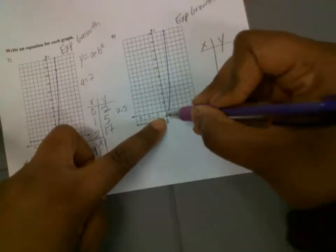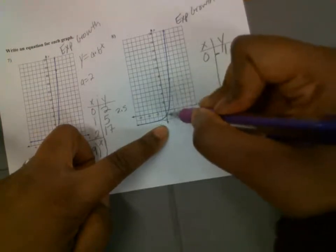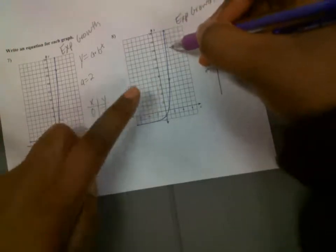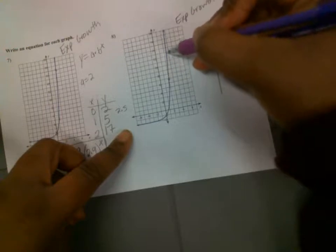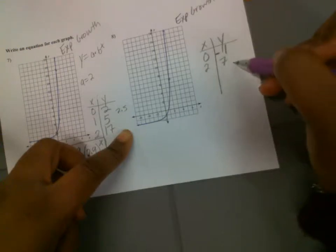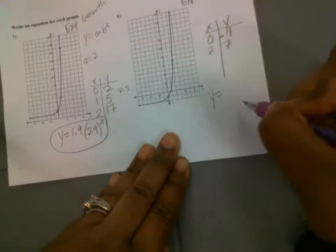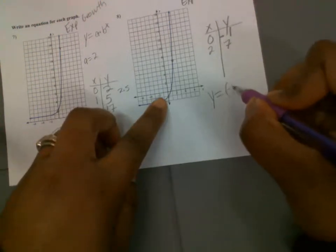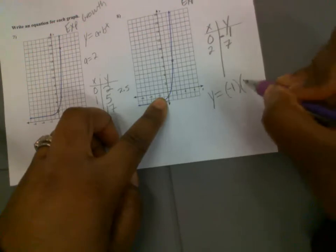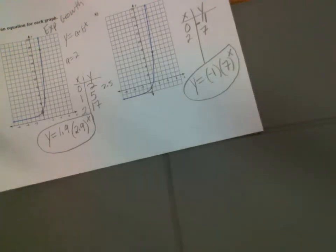For the next graph, this is also exponential growth. We got the point 0 and negative 1, and another point at 2 and 7. It looks like we're multiplying by 7 every time. So our equation is y is equal to negative 1 times 7 to the x power. Please submit this assignment and we'll work more on this next week. Have a good one.